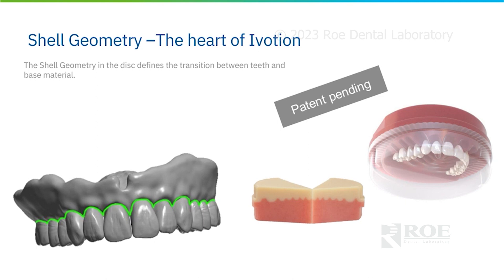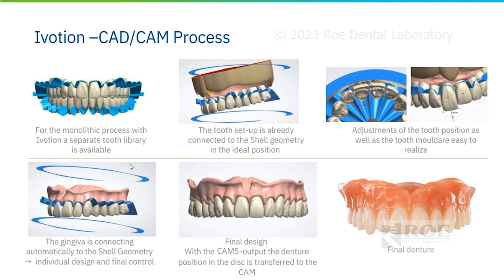There's a patented design with shell geometry which matches seamlessly with the software. This shell geometry defines the transition between the tooth shape and the gingival shape. With the iVotion CAD-CAM process, there is a very unique blue ribbon that corresponds to the shell geometry found in the iVotion puck, demarcating the tooth from the pink gingiva. You can adjust positions and do morphing — for example, if a patient wants something matching their natural teeth, it can be done with the iVotion. This unique shell geometry allows for a very natural appearance for the prosthetic.